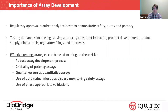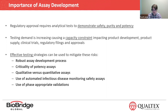We've come up with several testing strategies that can be used to mitigate this risk. One being using a robust assay development process, focus on potency assays since they're so critical, the use of qualitative versus quantitative safety assays, the use of automated infectious disease monitoring assays, and last of all, use of phase-appropriate validation. Now I will go over each of these strategies in more detail.